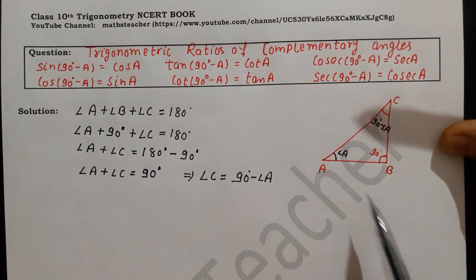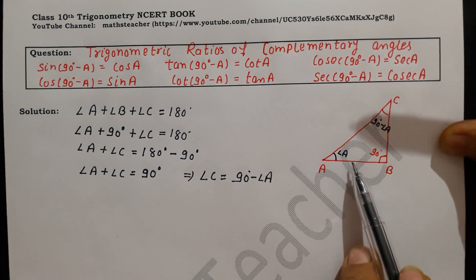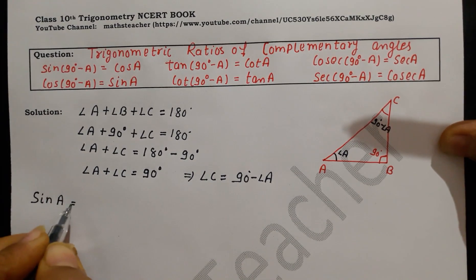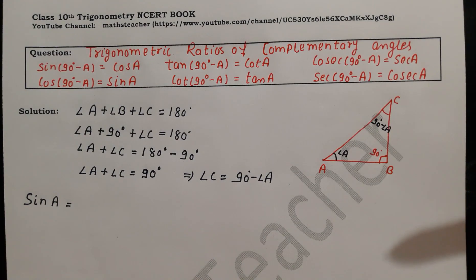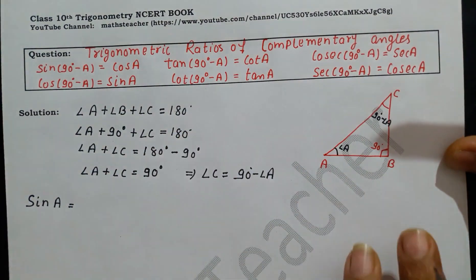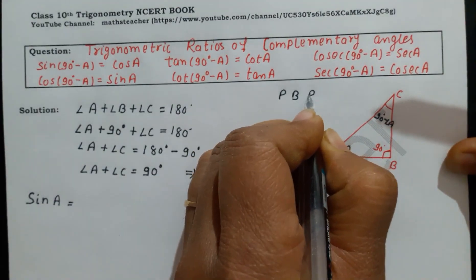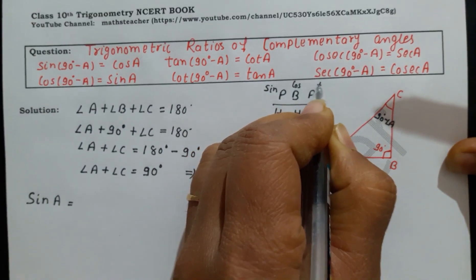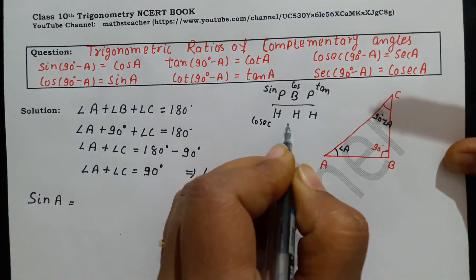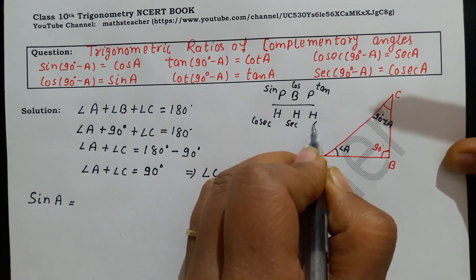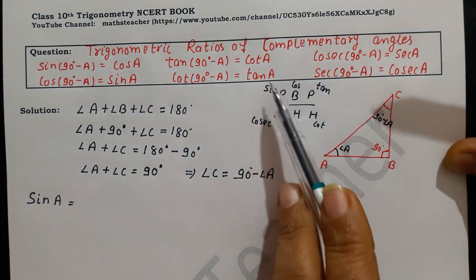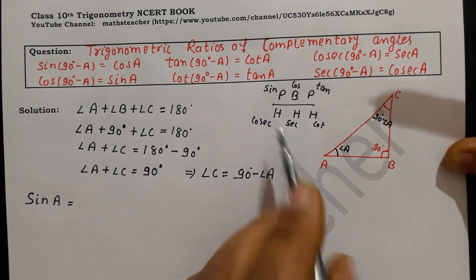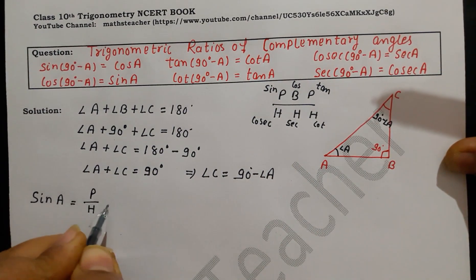Now for this triangle, because angle A is the base angle, we write the trigonometric ratios with respect to angle A. For triangle ABC: sin A equals perpendicular upon hypotenuse. The formula to remember is P/H for sin, B/H for cos, and P/B for tan.